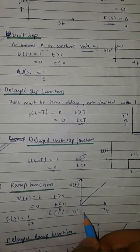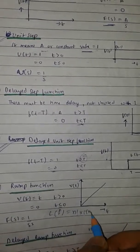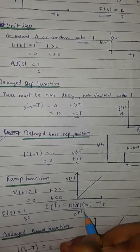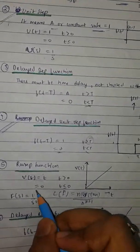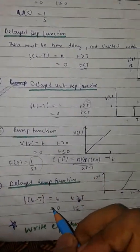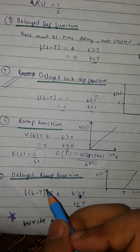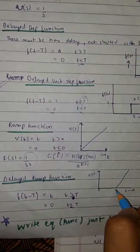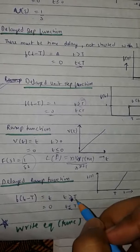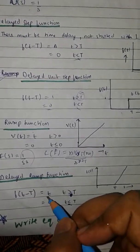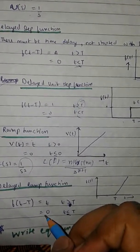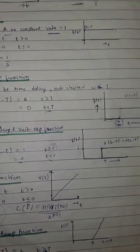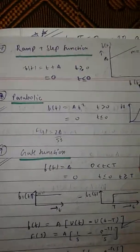For t greater than 0 the ramp function equals t, and for remaining values it is 0. We know that the Laplace of t to the power n is factorial n, or gamma function n plus 1, divided by s to the power n plus 1. Therefore, the Laplace of the ramp function comes out to 1 upon s squared.